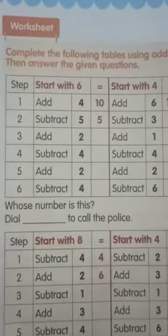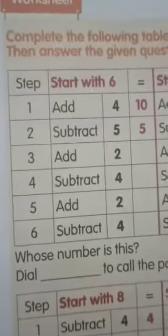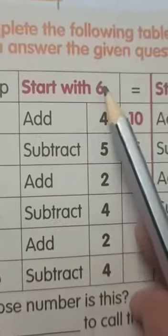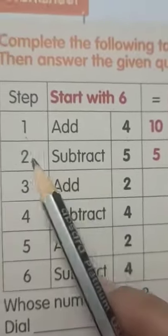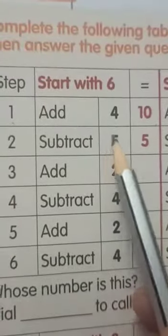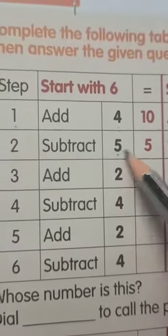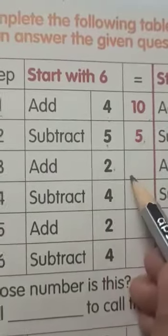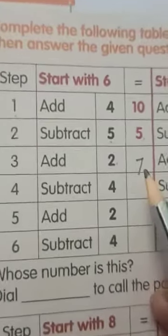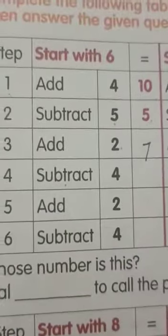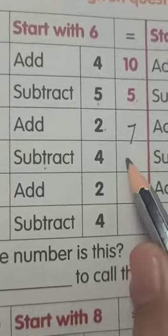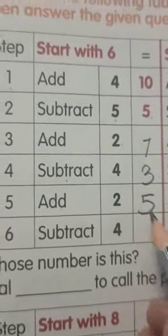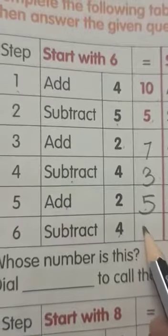On the next page we have a worksheet. Let's complete it. The first sequence: start with six, add four — six plus four is ten. Then subtract five from ten — ten minus five is five. Add two to five — five plus two is seven. Subtract four from seven — we get three. Add two to three — five. Then subtract four from five — we get only one.